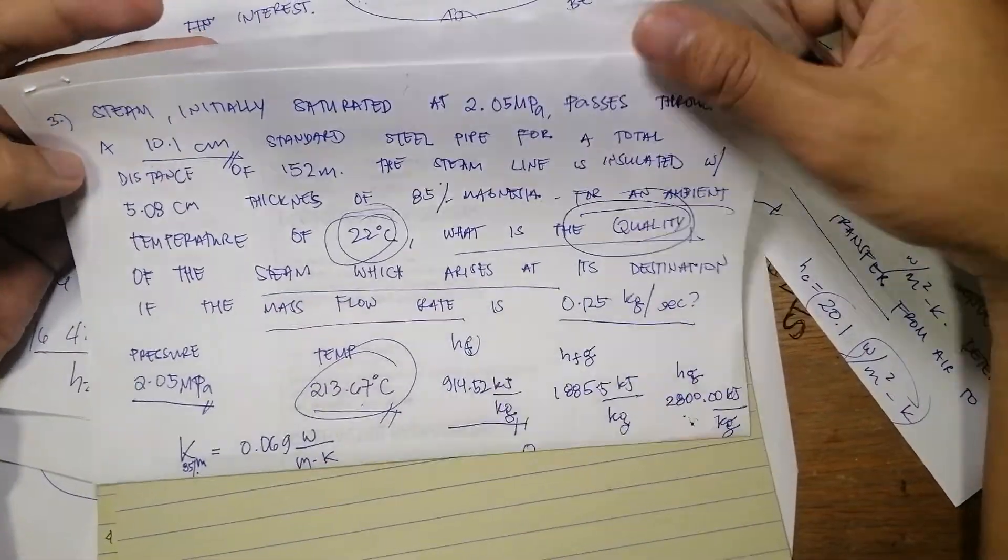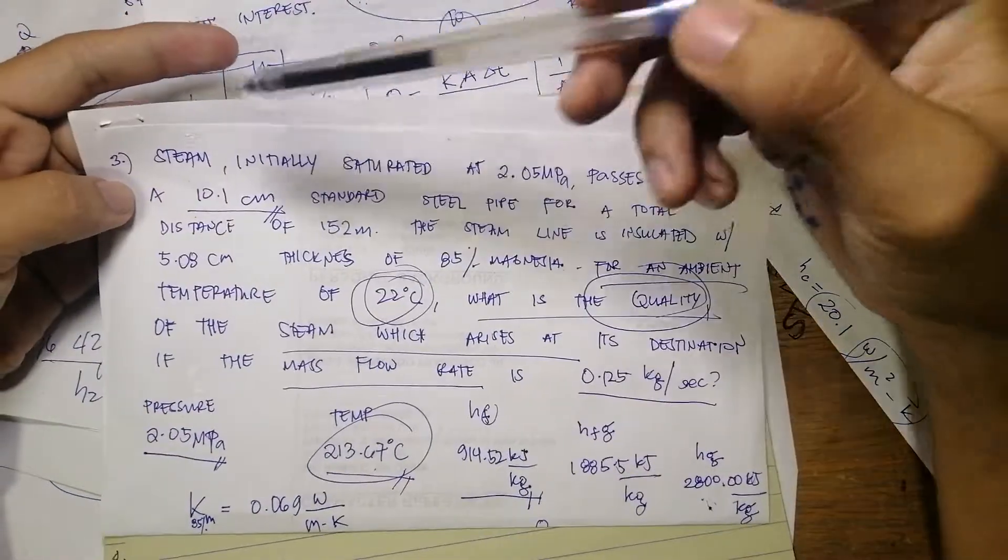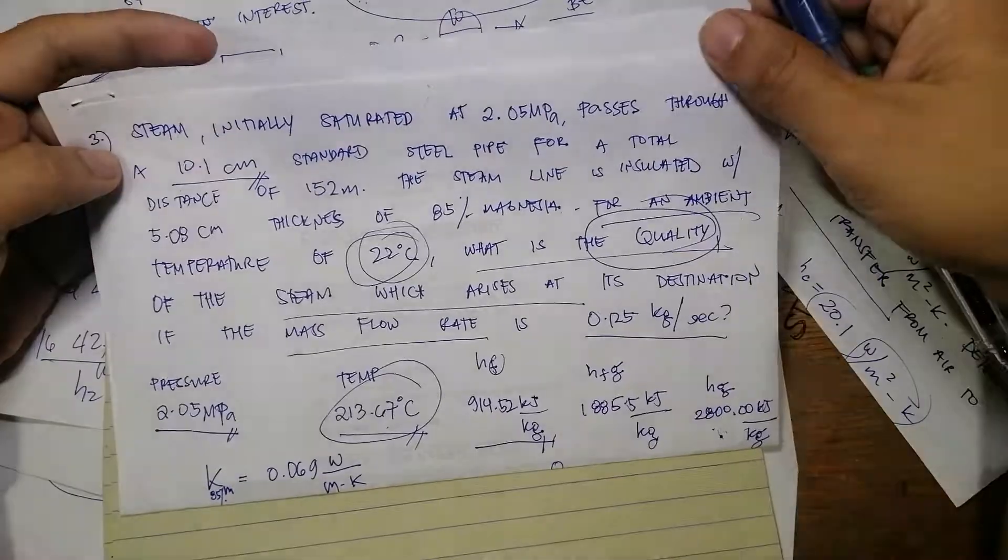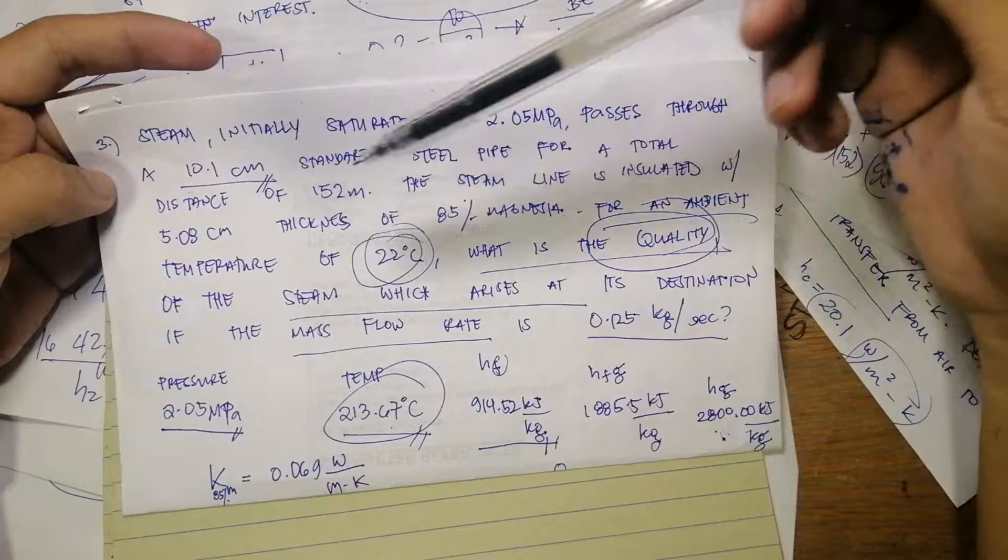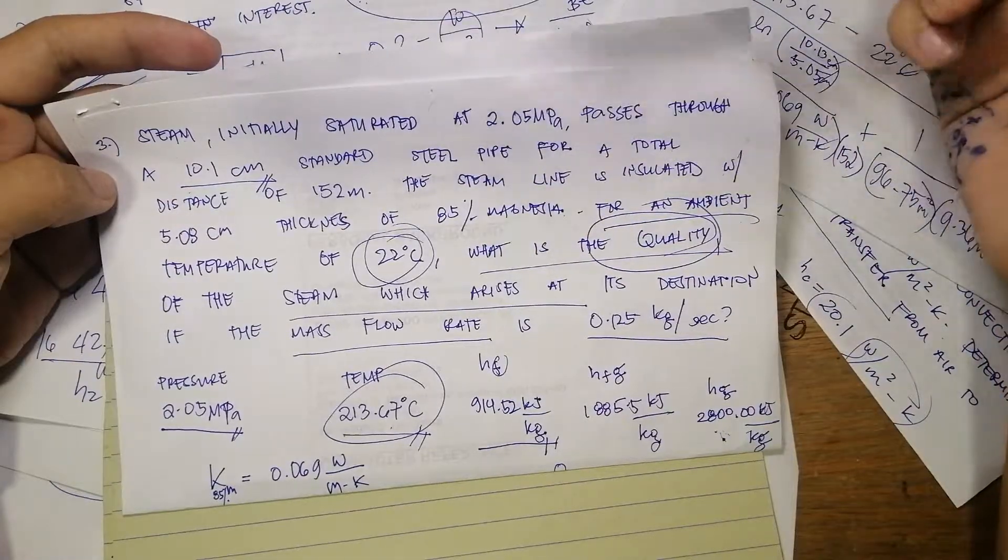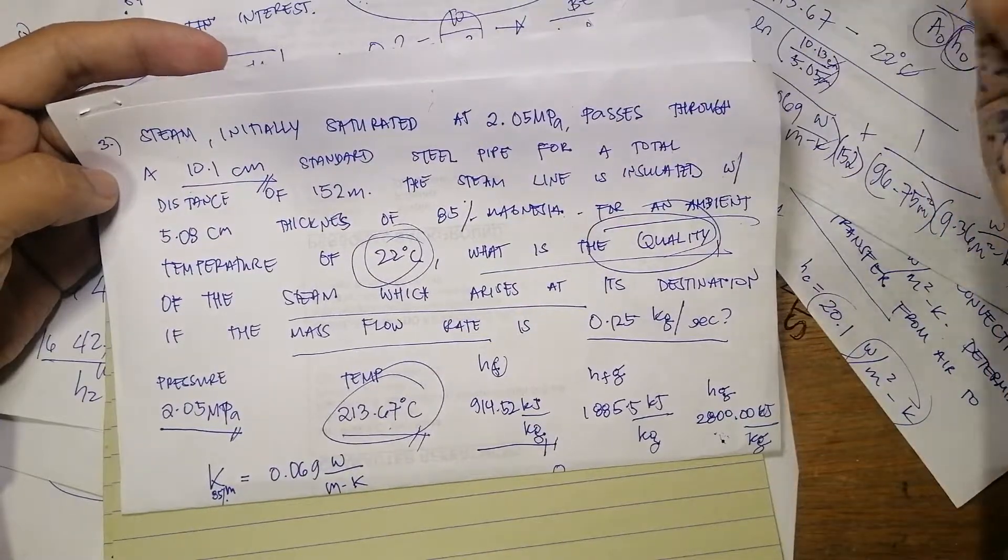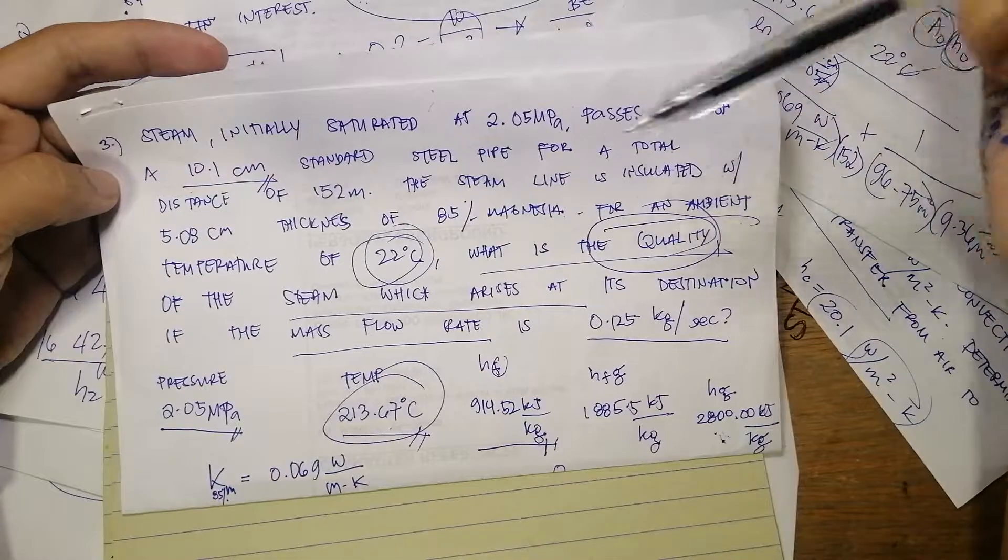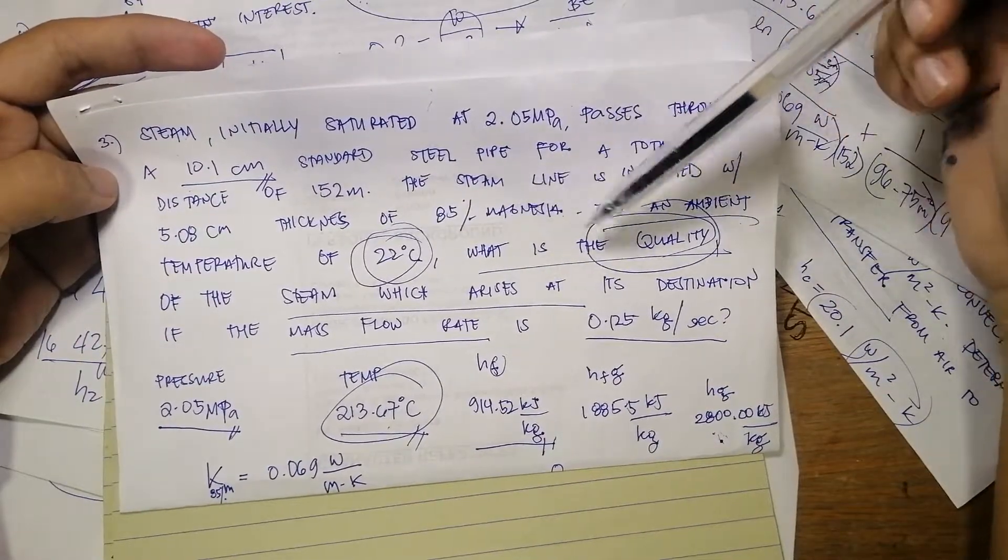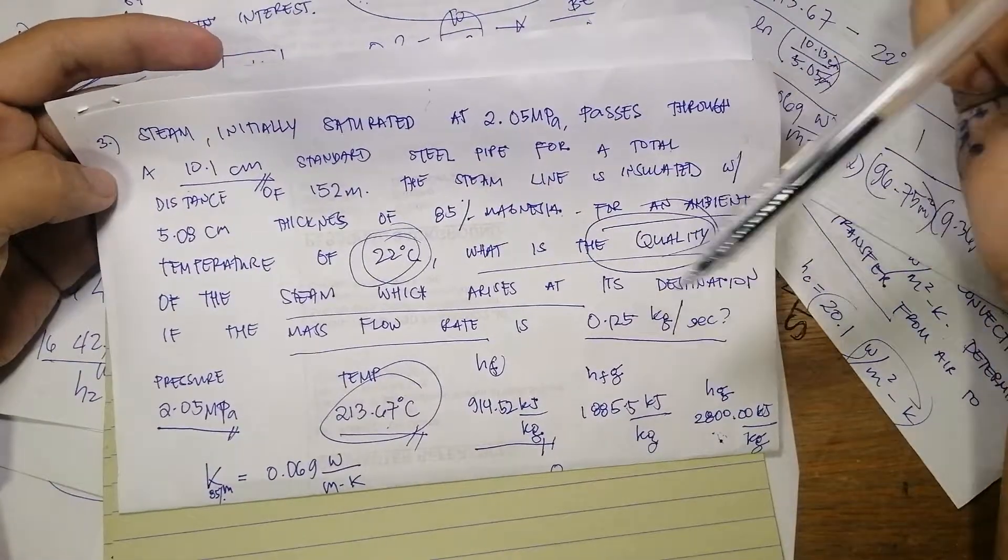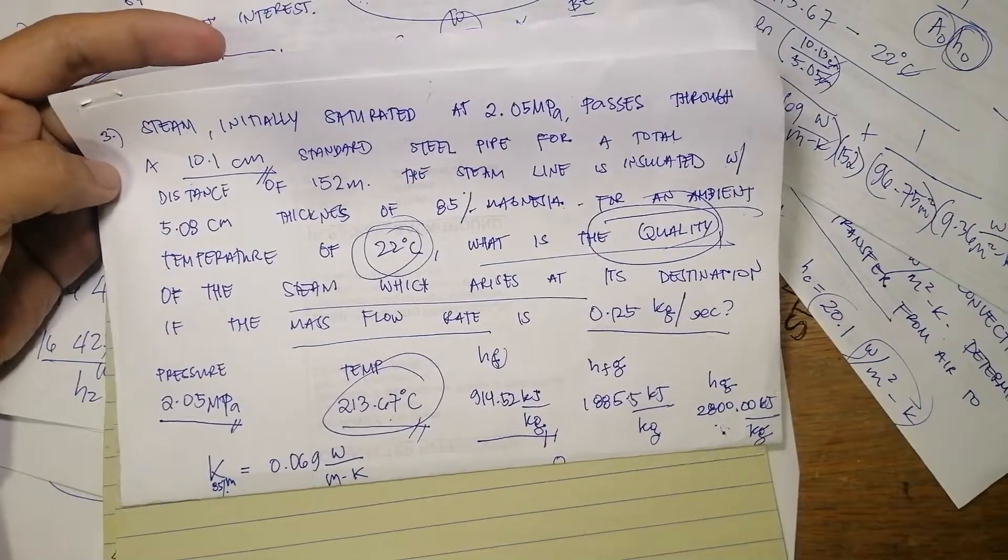Okay, so we have this problem. It includes steam. Steam initially saturated at 2.05 megapascals passes through a 10.1 centimeter standard steel pipe for a total distance of 152 meters.